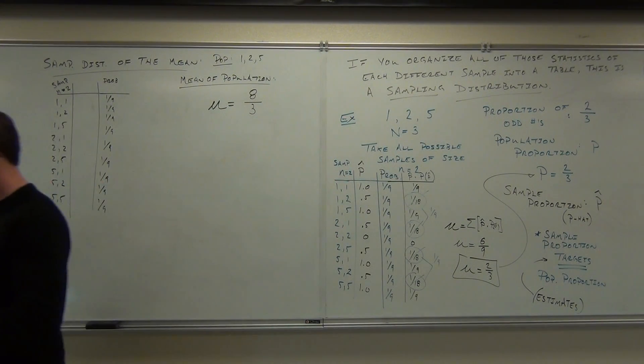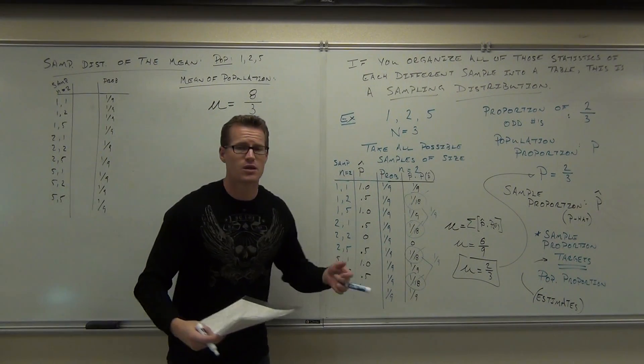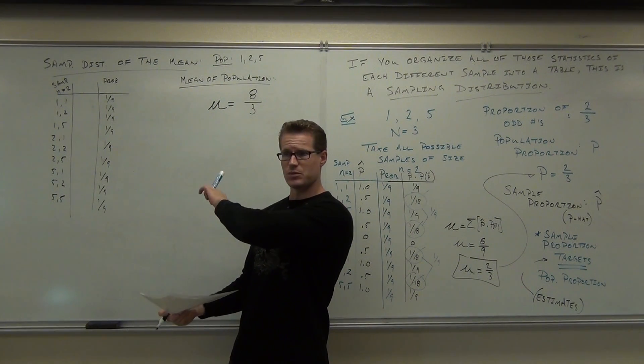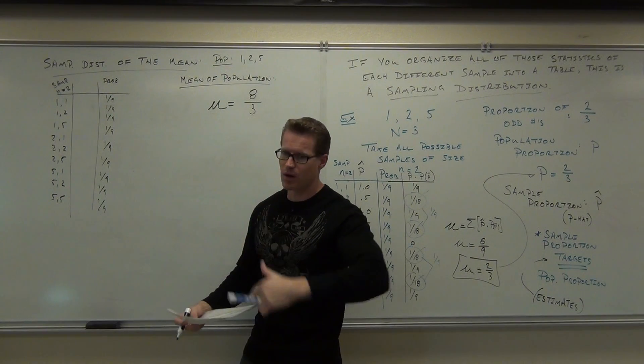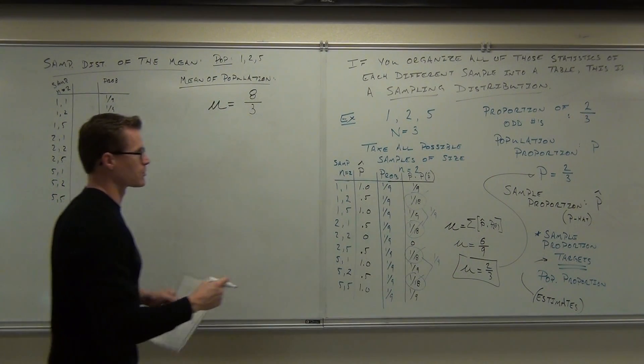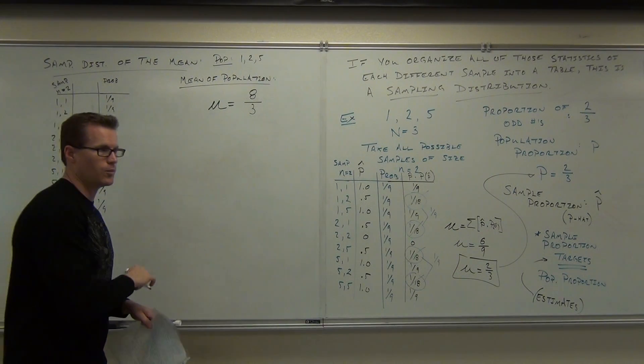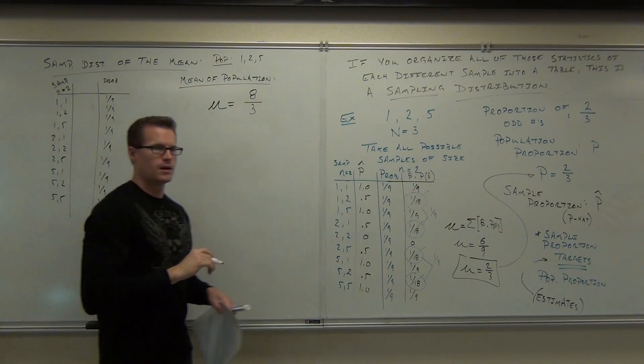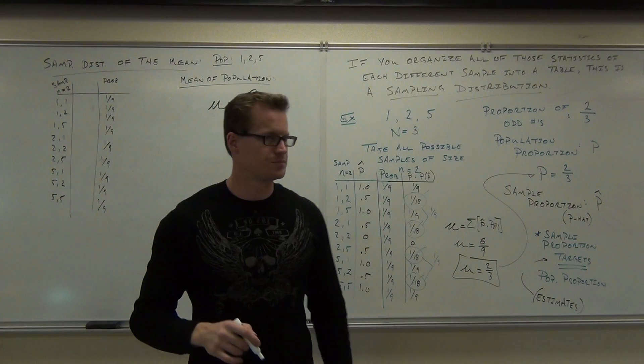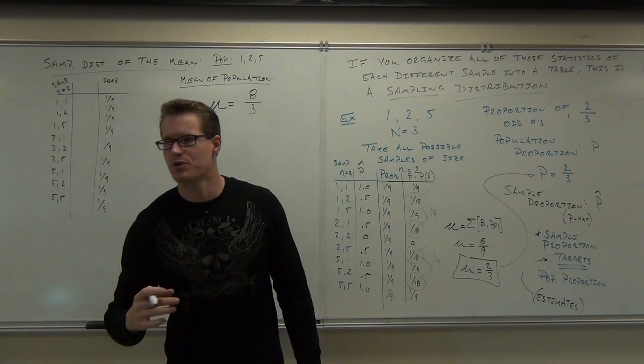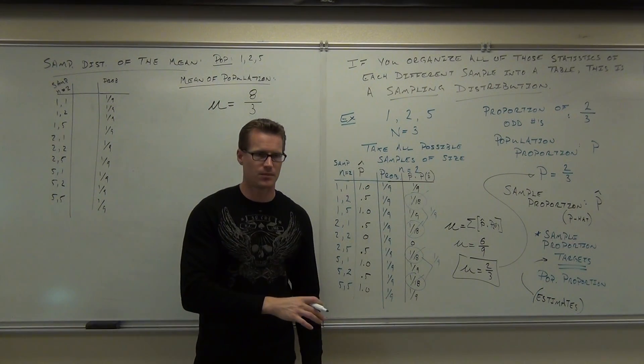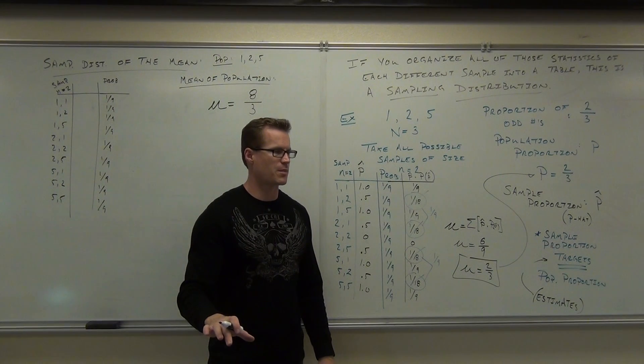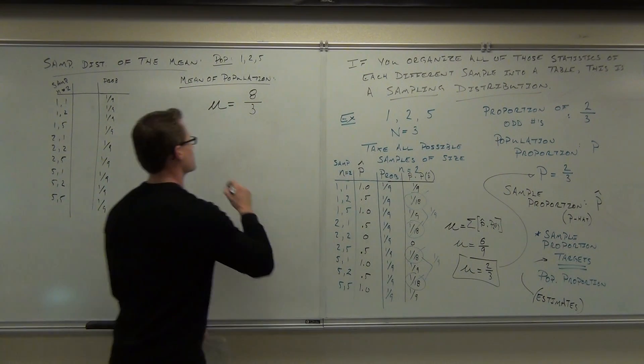We're on something new. Whole new ball game. We're talking about the mean now. You find the mean, which you know how to do. The mean for the population is labeled mu. We get 8 over 3. We added them all up, we divide by the number you added. What do you use to represent the sample mean?